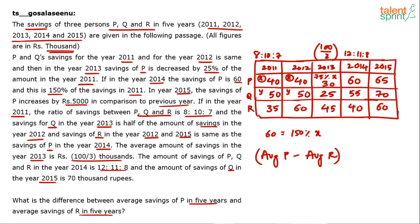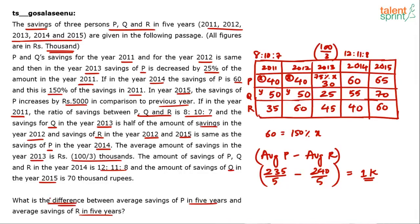Average of P: sum = 40 + 40 + 30 + 60 + 65 = 235, so average = 235/5 = 47. Average of R: sum = 35 + 60 + 45 + 40 + 60 = 240, so average = 240/5 = 48. The difference is 1 (in thousands), so the answer is 1000 rupees.